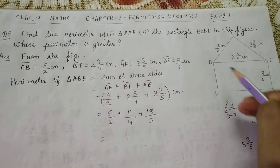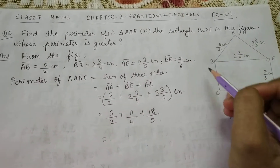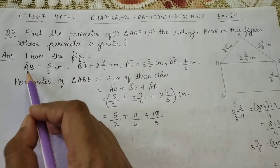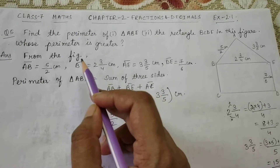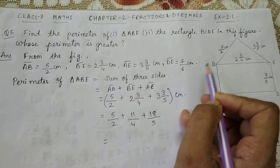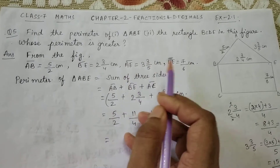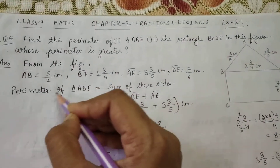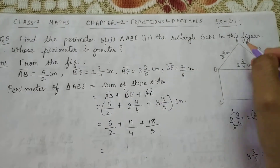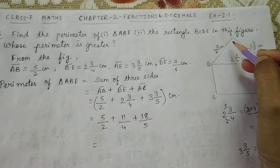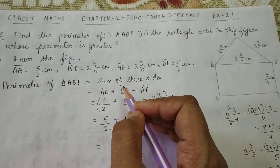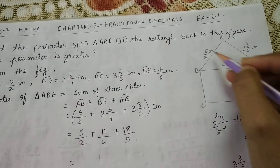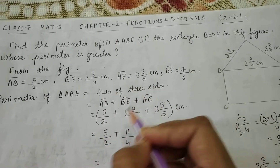From the figure, first write down all the side lengths. Side AB = 5/2 cm. I have also written all the other sides: BE, AE, and DE. Now, perimeter of triangle ABE equals the sum of its 3 sides — that is what we learned in class 6. So write down AB + BE + AE.